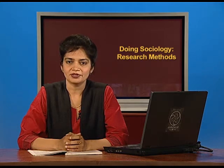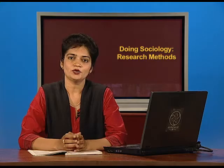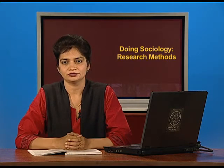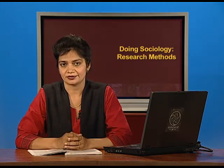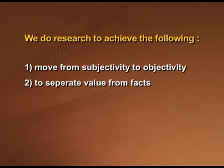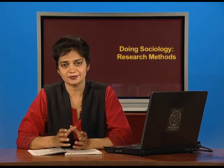Today we will discuss something very important in sociological research: subjectivity and objectivity. You may be wondering why do we do research — what is the need to carry out research? We do research in order to achieve three things: first, to move from subjectivity to objectivity; second, to separate value from facts; and third, to differentiate between belief and knowledge. We will discuss these concepts in detail today.